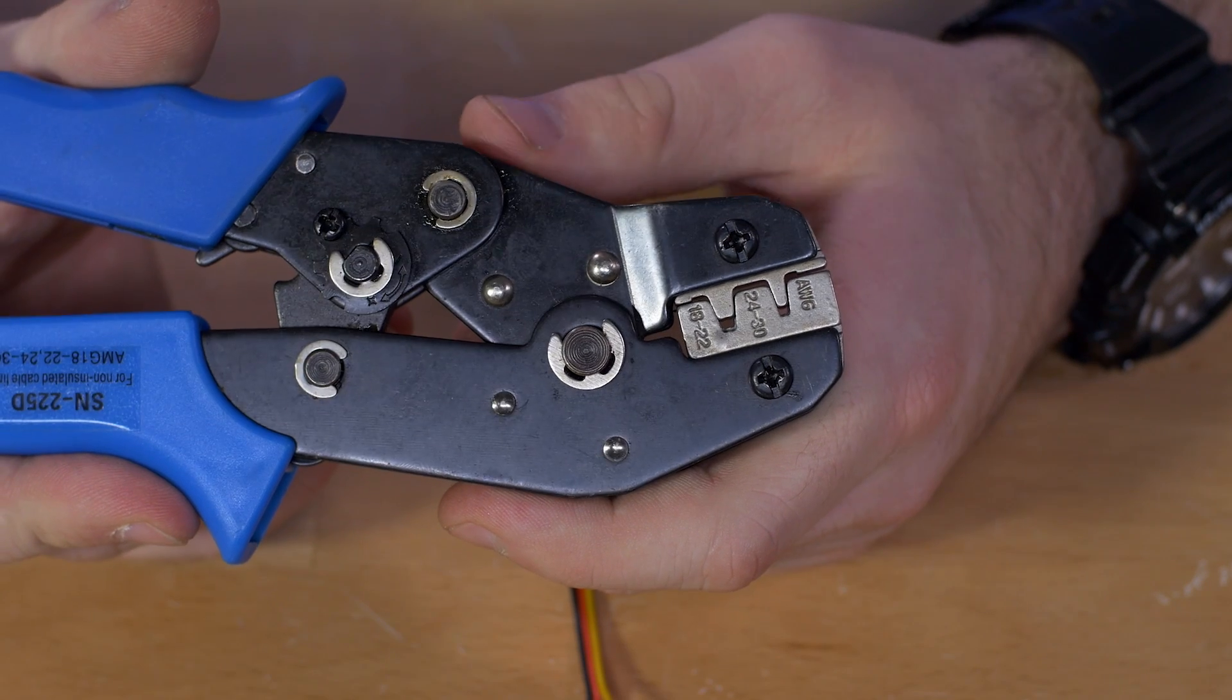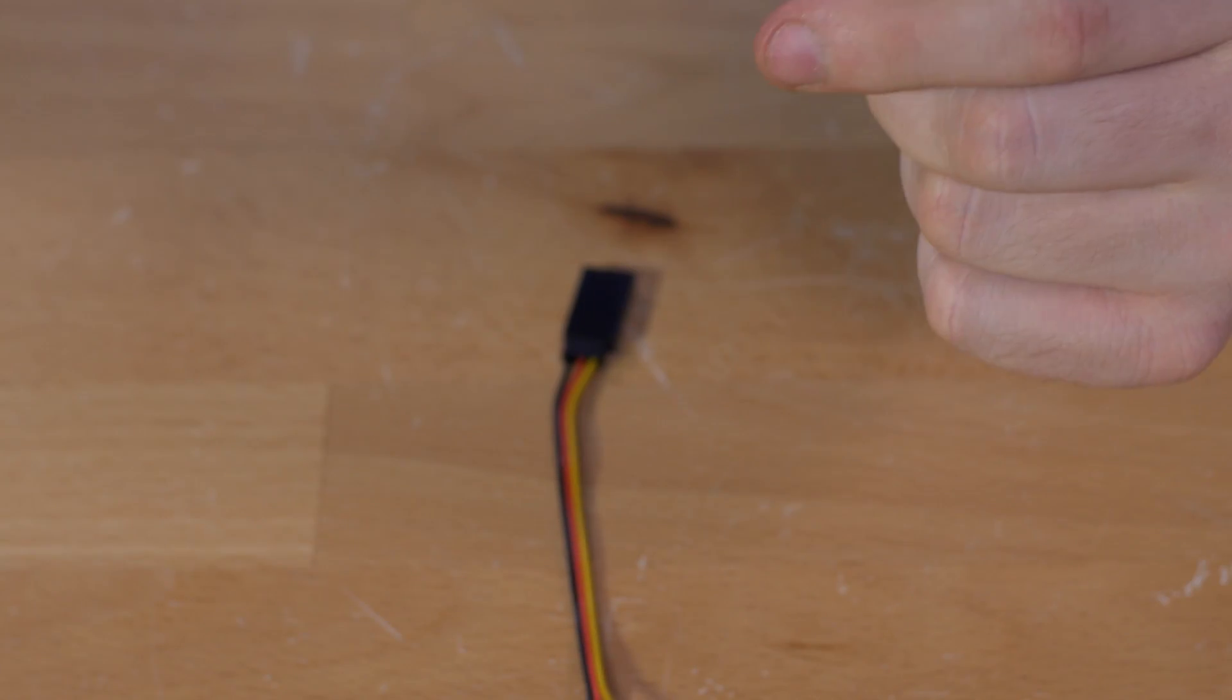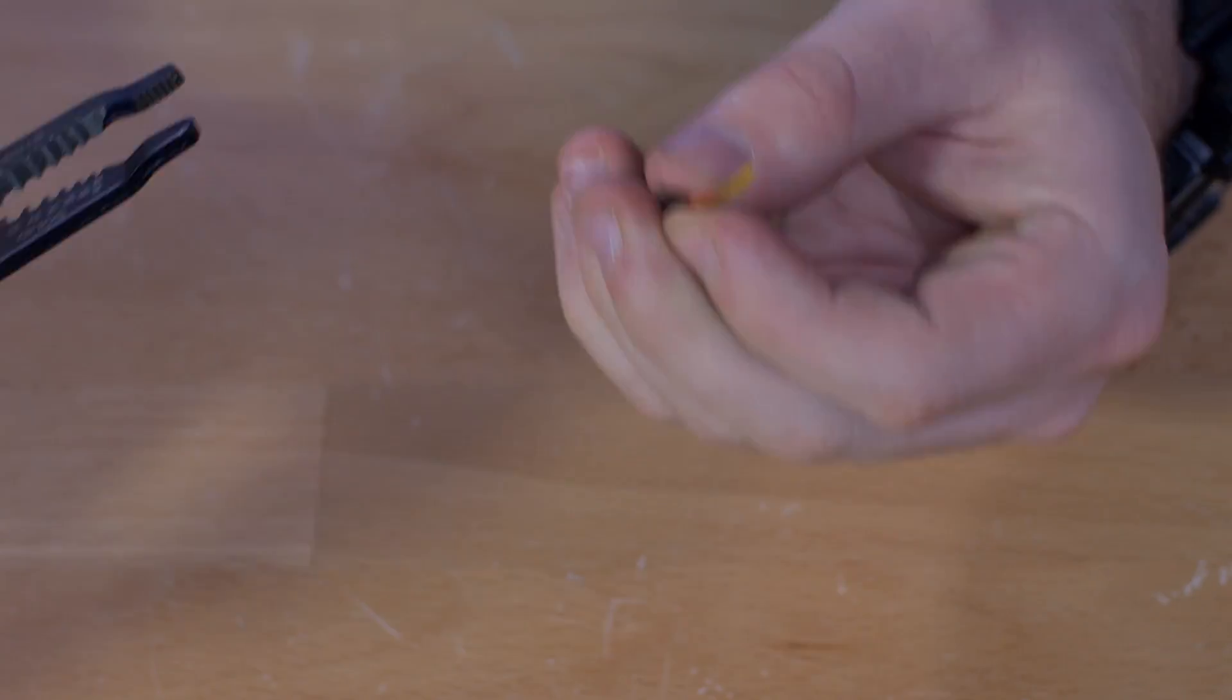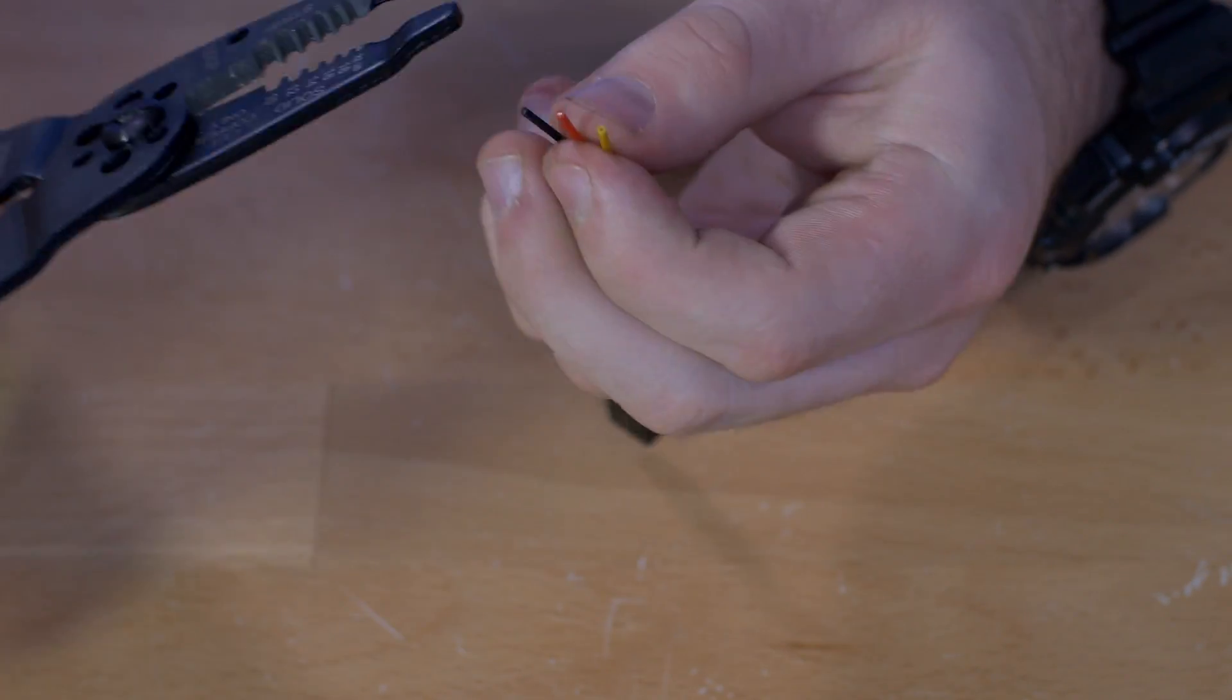In this video, we'll show you how to use Servo City's pin crimpers. For the first step, we're going to strip the sheathing off the ends of our servo wire.